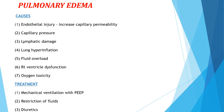The causes of pulmonary edema include: endothelial injury, increased capillary permeability and capillary pressure, lymphatic damage, lung hyperinflation, fluid overload, and right ventricular dysfunction with oxygen toxicity. Treatment includes mechanical ventilation with PEEP, restriction of fluid, and diuretics.